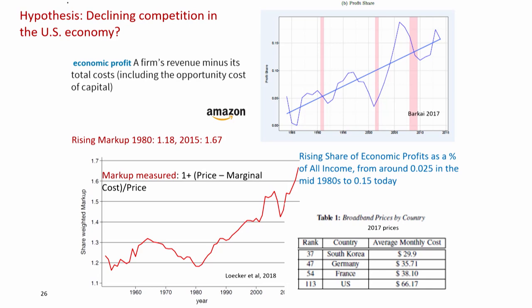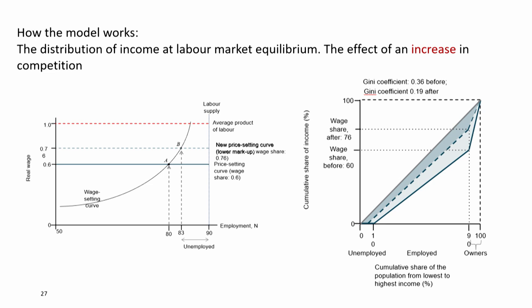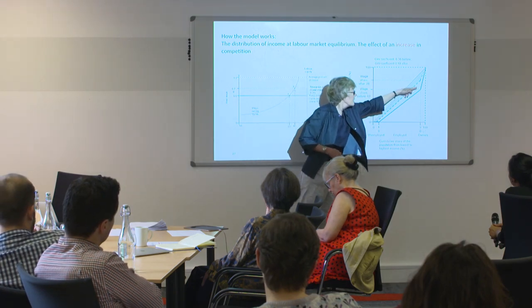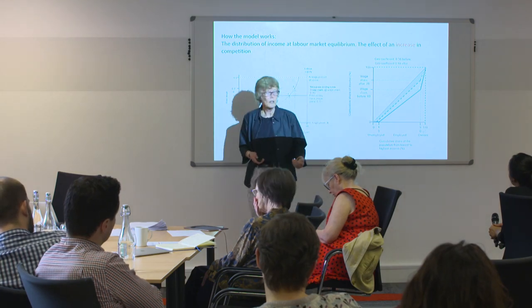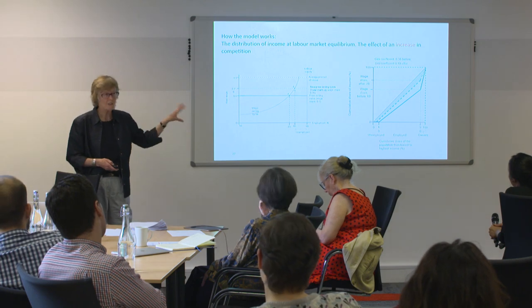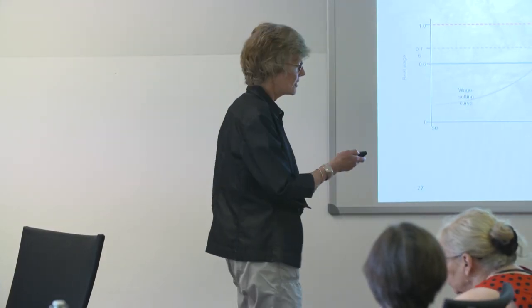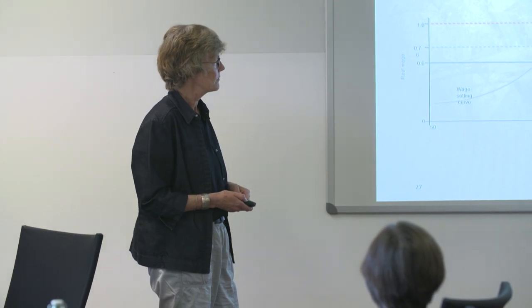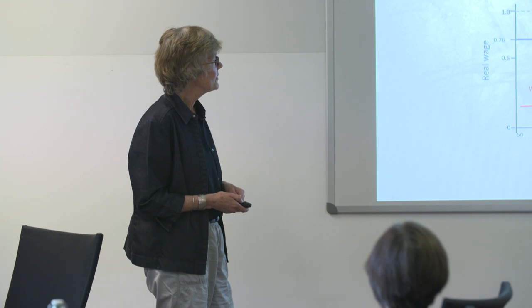Some people may think the US is a very competitive economy — data on broadband prices by country help illustrate that is a misconception. We can manipulate the model: if there's an increase in competition, the price-setting real wage shifts up, the equilibrium shifts from A to B, and we can show that shifts the second kink of the Lorenz curve inward so the Gini coefficient declines. Students can calculate this and confirm the connection between what's going on in the labor and product market model and inequality.